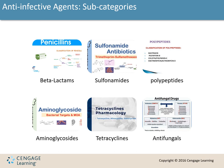Sulfonamides, often called sulfa drugs, are synthetic drugs that work by disrupting the synthesis of folic acid. Bacteria need folic acid to produce their DNA and purines — without it, they can't replicate. Sulfa drugs are effective against many gram-positive and gram-negative bacteria. Common examples include sulfamethoxazole, sulfacetamide, and sulfasalazine.